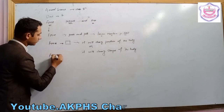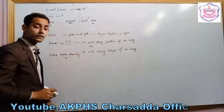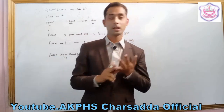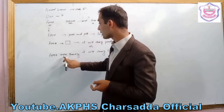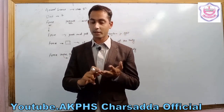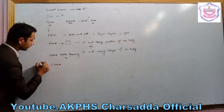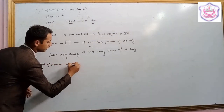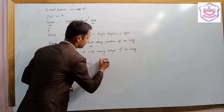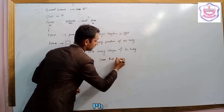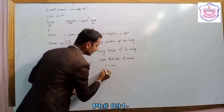Force is a vector quantity — it has both magnitude and direction specified. The unit of force is the Newton. The unit of force is derived from Newton's second law: F is equal to ma.